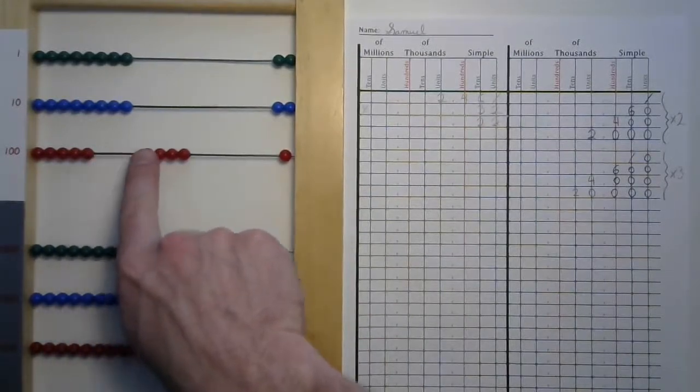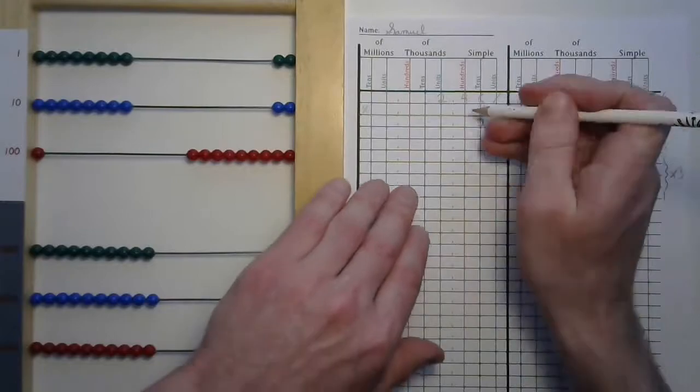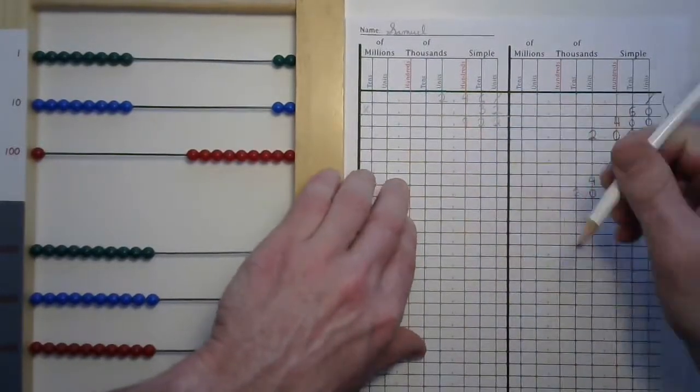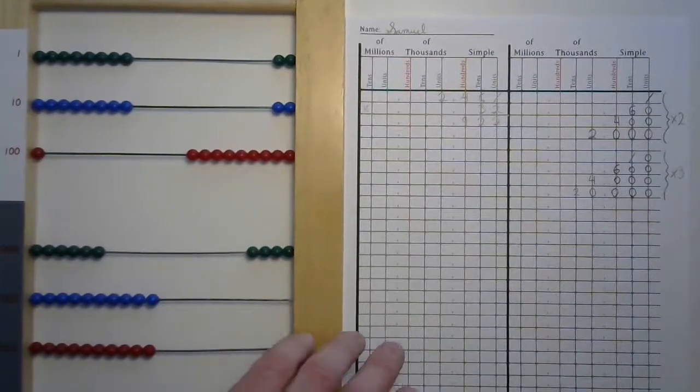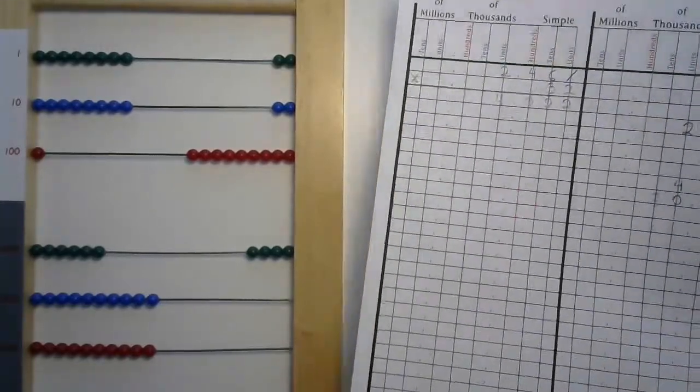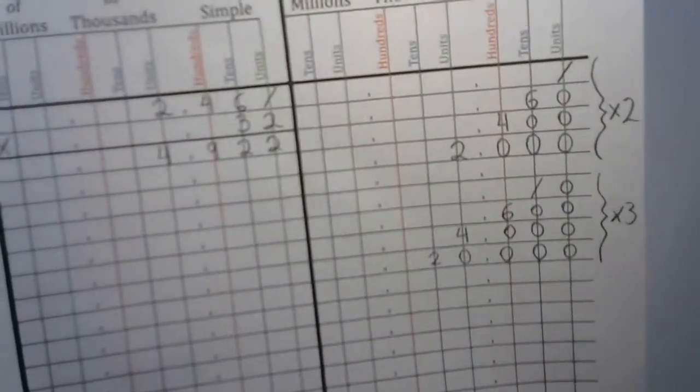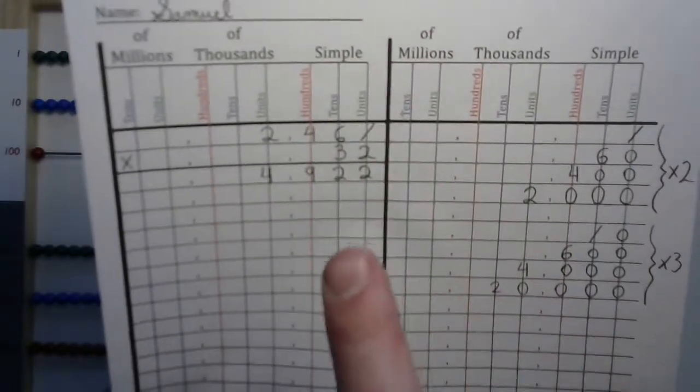Four taken two times. There's four taken once, four taken twice. I see a nine there. And now two taken once, two taken twice gives us four for a partial product of 4922. And I say partial product because we're not finished yet. We've only just completed our units digit.